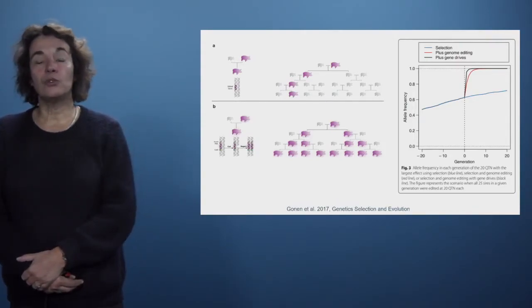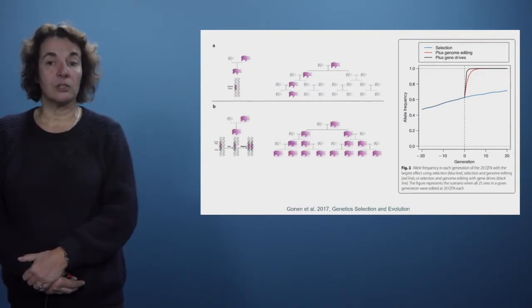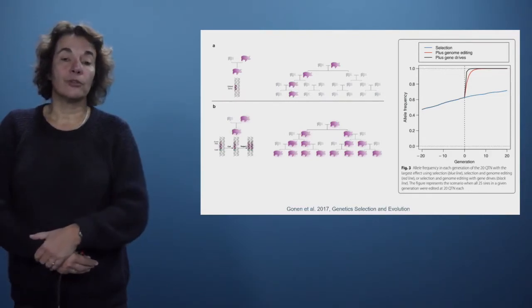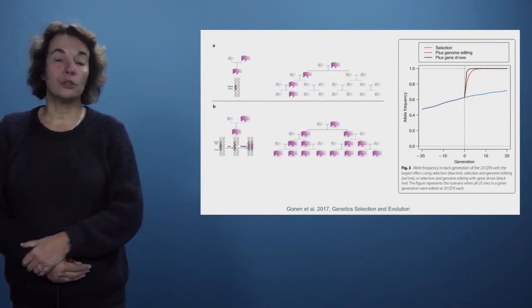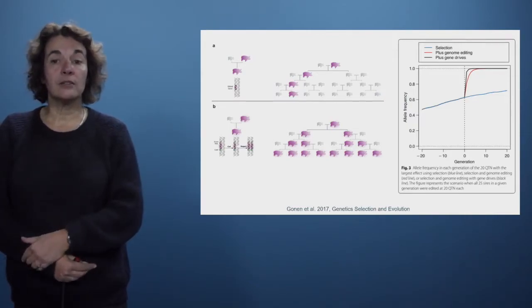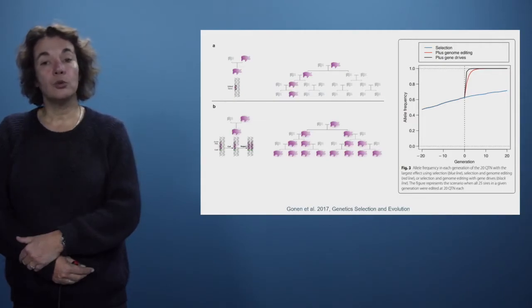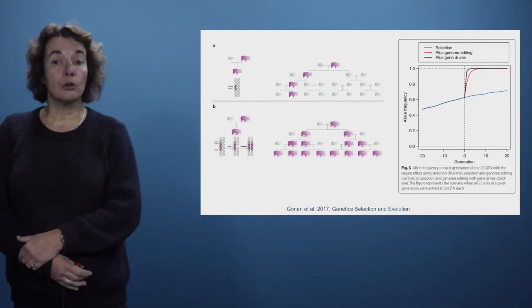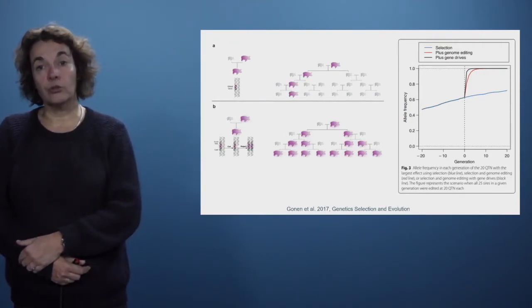In a simulation of a population of 1,000 pigs with 25 boars selected each generation, selecting for a favorable allele present in 50% of animals achieves 72–75% frequency after 20 generations. Normal gene editing achieves 100% of the favorable allele in only six generations, and gene drive — making animals immediately homozygous — achieves it in only two generations. Gene drive is thus a method to spread an edited gene throughout a population far more rapidly.